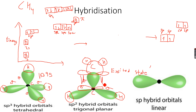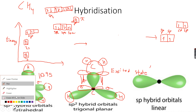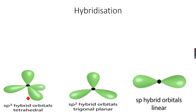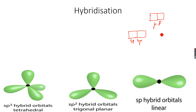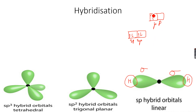The pi bond involves sideways overlapping — you can see that it is a sideways overlap. Now for SP hybridization: there are two lonely p orbitals and two SP hybridized orbitals. The two SP orbitals will overlap with hydrogens to give sigma bonds, and the two p orbitals will overlap with each other to give pi bonds.